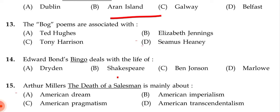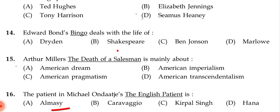Next question: Edward Bond's 'Bingo' deals with the life of — (a) Dryden, (b) Shakespeare, (c) Ben Jonson, (d) Christopher Marlowe. The correct answer is (b) Shakespeare.